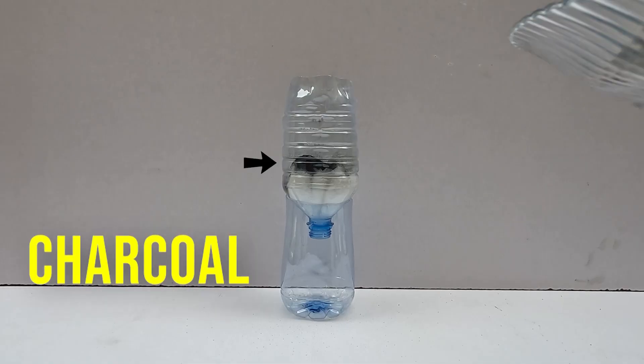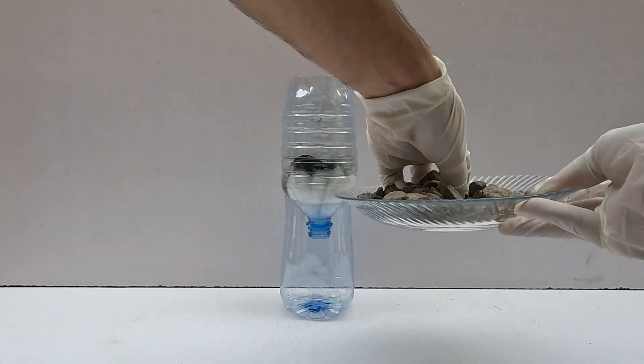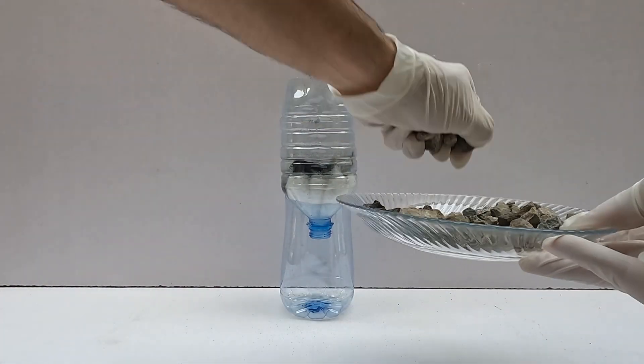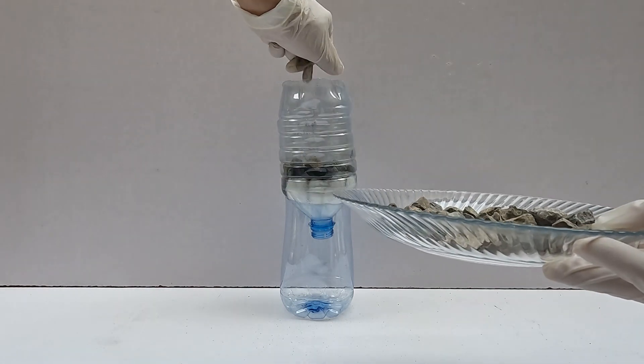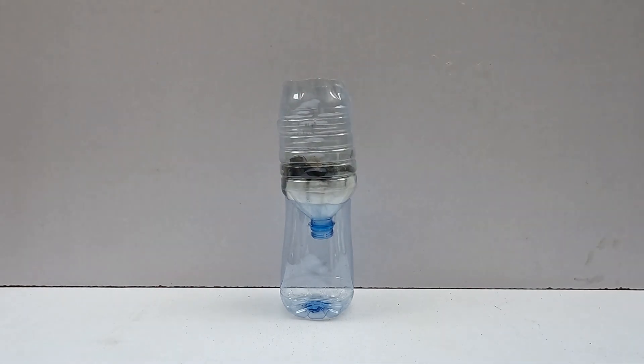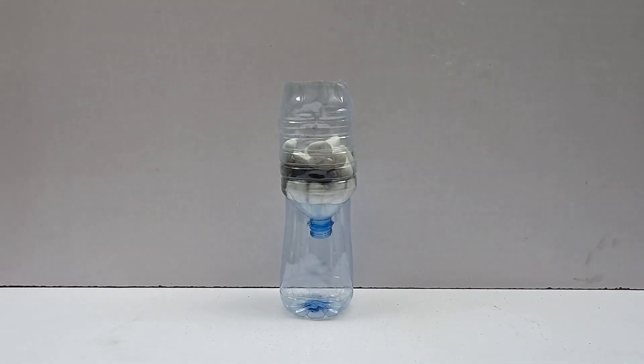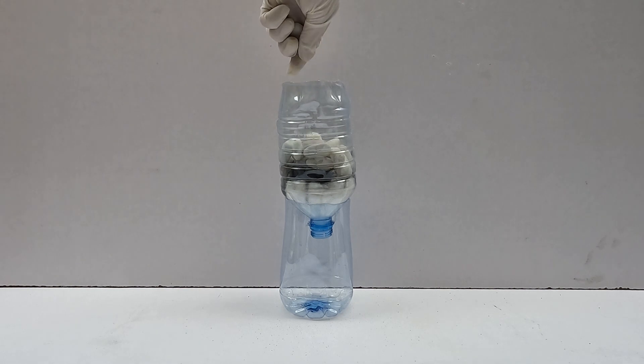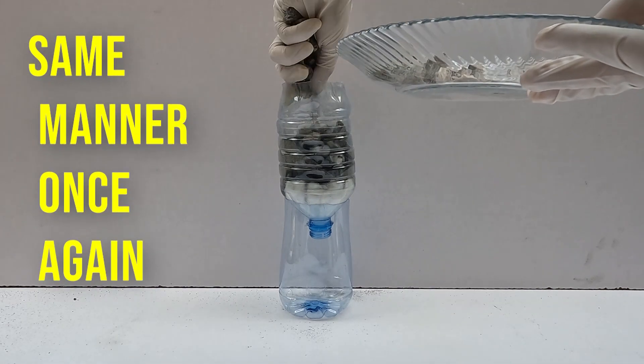After making a half-inch layer of charcoal, put a 1-inch gravel layer and then put a 2-inch pebble layer. Repeat the layer making process in the same manner once again.